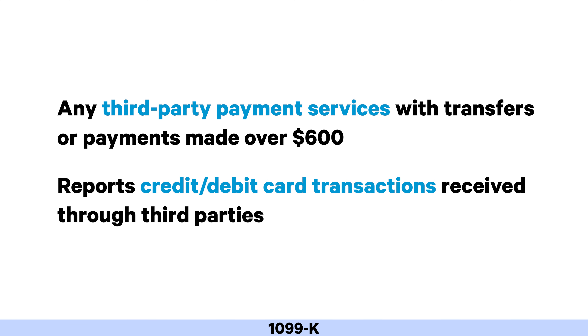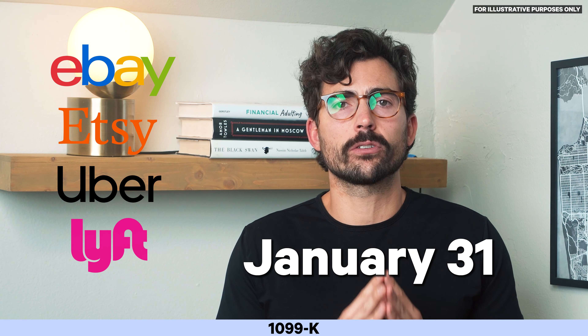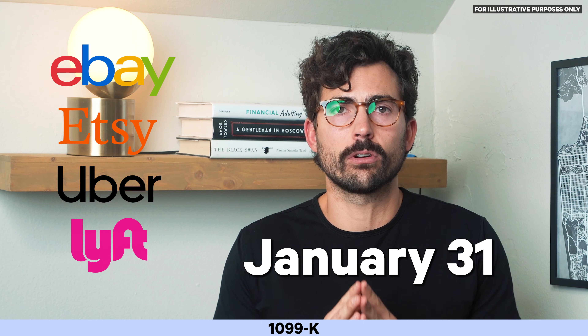The 1099-K not only includes those Venmo payments but also reports credit or debit card transactions received through third parties. Online auction payment facilitators and marketplaces like eBay and Etsy, or gig worker platforms like Uber and Lyft, also generally act as third-party settlement organizations. You should receive these forms by January 31st each year if you meet the $600 in gross sales threshold. Let's say you did $1,000 worth of freelance work for a client during the year — you'll likely need to report that income as business income on your tax return.